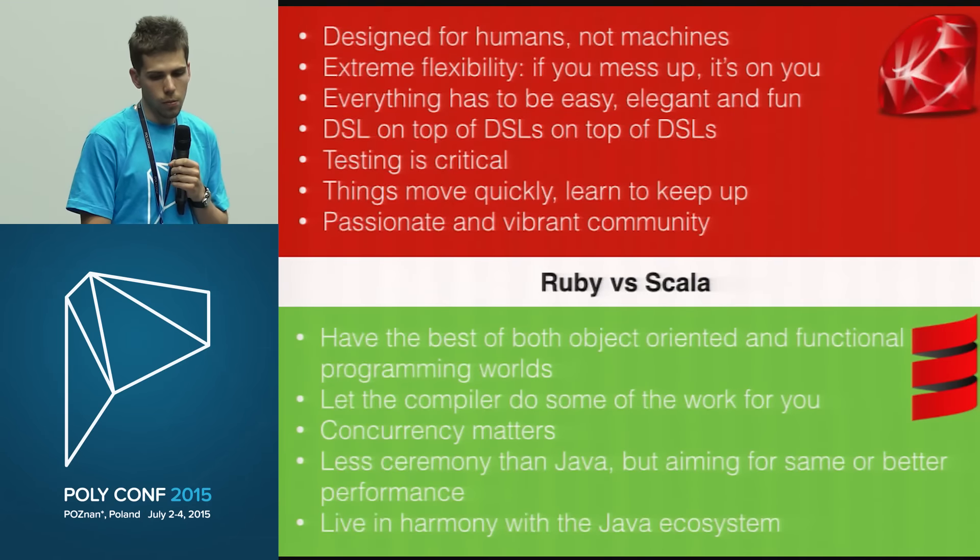And how to install both of these languages. We can install Ruby very easily — like `brew install ruby` on Mac, and `brew install scala` also on Mac — so installation is pretty simple. Now, how does the package system work?